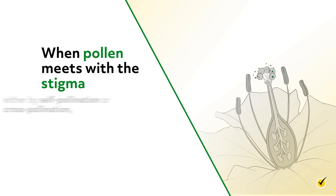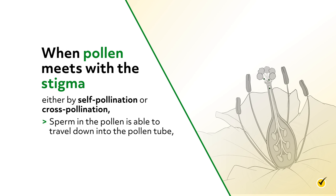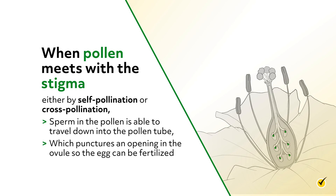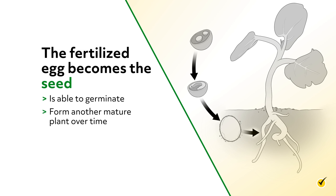When pollen meets with the stigma either by self-pollination or cross-pollination, the sperm in the pollen is able to travel down into the pollen tube, which punctures an opening in the ovule so the egg can be fertilized. The fertilized egg becomes the seed and is able to germinate and form another mature plant over time.